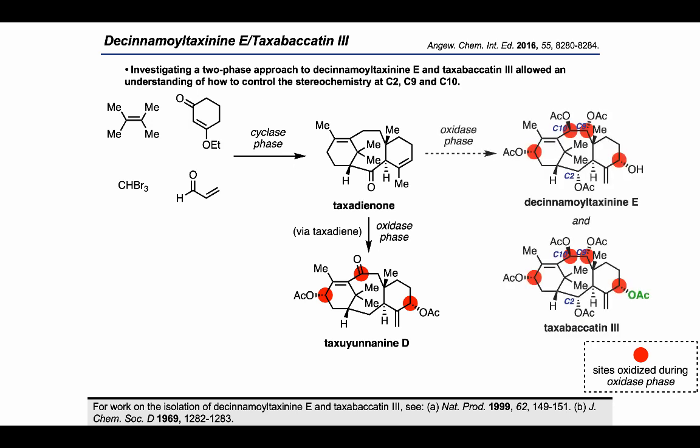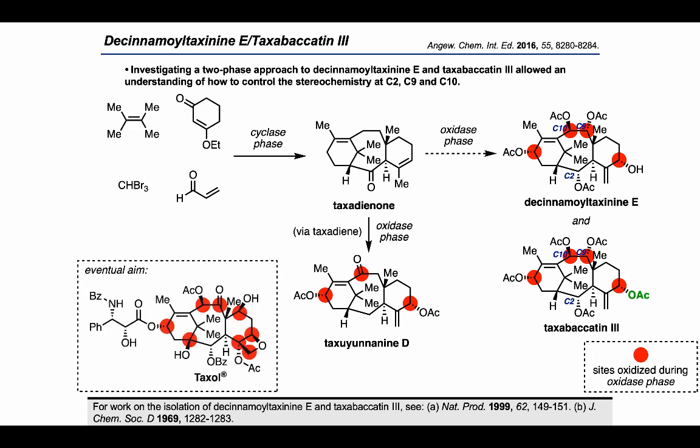They thought that if they could develop a different oxidase phase reaction sequence, it might be possible to reach D-cinnamoyl taxanine E and taxibacadine 3 — the latter bearing an additional acetyl group compared to the former, plus a further carbon-oxygen bond that would need to be installed at C9. Pursuing these targets would also require setting stereochemistry at C2, C9, and C10. With the eventual aim of applying the two-phase strategy to taxol, these two new targets looked like a good intermediate step toward the group's long-term goal.